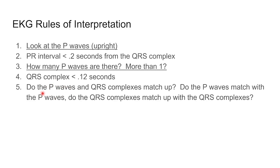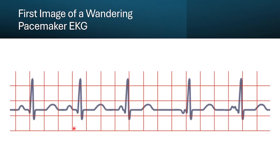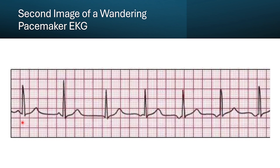For a wandering pacemaker, it's a rhythm where the pacemaker site shifts between the SA node, the atrial tissue, and the AV node. The P waves are going to vary in shape and size, so we really want to pay attention to P wave morphology. Heart rate is 60 to 100 beats per minute. Causes include increased vagal tone, certain medications, and it's usually a benign symptom. In this first wandering pacemaker example, some P waves are upright, but then sometimes we have an inverted P wave or abnormal morphology. The AV node fires off, traveling back over to the SA node, giving us this very abnormal rhythm.